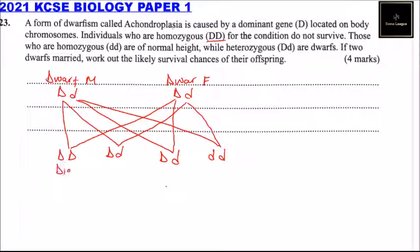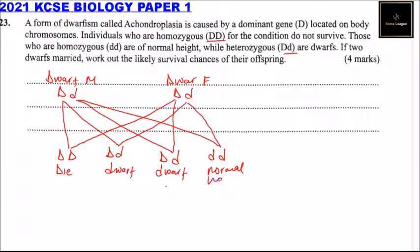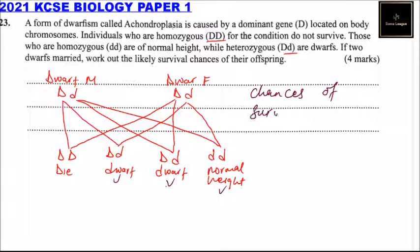Since we are told that those who have DD will die, that offspring does not survive. The remaining three are: a dwarf, a dwarf, and a normal height individual — all of whom survive. So the chances of survival equal three out of four, or 75%. That's how you answer that.